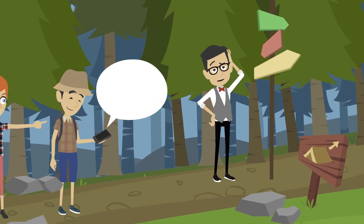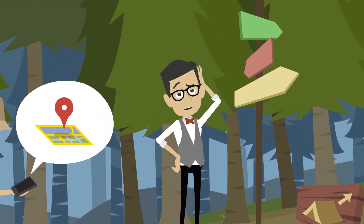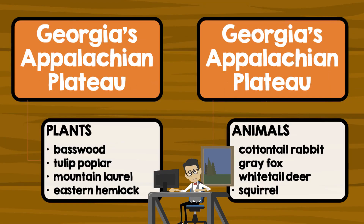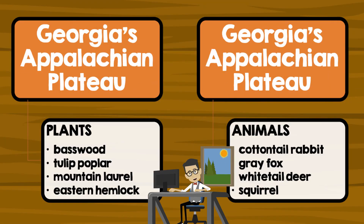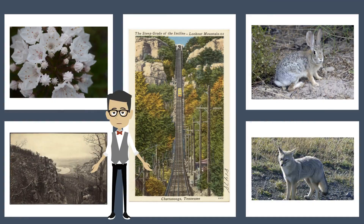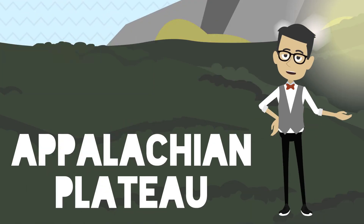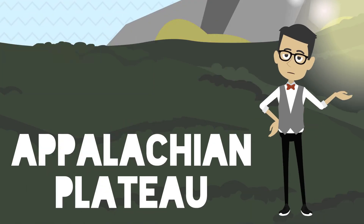The Appalachian Plateau has the coolest average temperatures in the state of Georgia. Plants in this region include basswood, tulip poplar, mountain laurel, and eastern hemlock. Animals include the cottontail rabbit, the gray fox, the whitetail deer, and the squirrel.